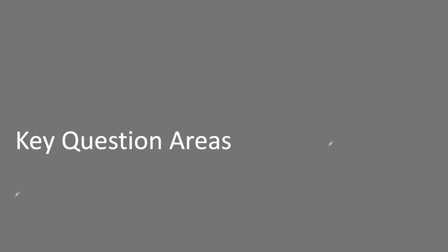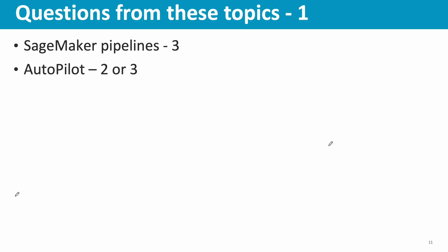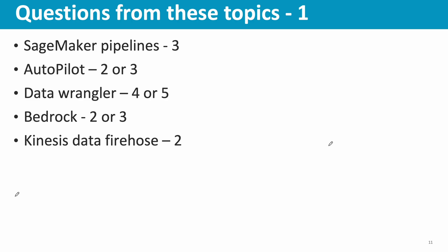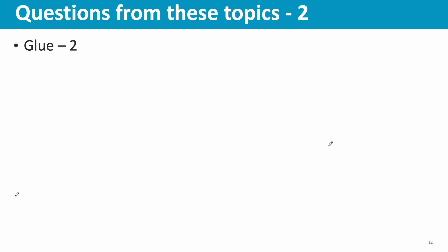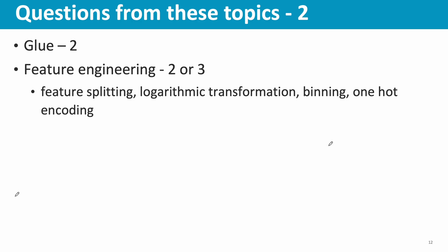Now the most important part: key question areas. SageMaker Pipelines — very important, at least three questions. Autopilot — two or three questions. Data Wrangler — four or five questions, very important, so spend enough time on it. Bedrock — two or three questions. Kinesis Data Firehose — a couple of questions. Glue — two questions. Feature engineering — two or three questions covering feature splitting, logarithmic transformation, binning, and one-hot encoding.